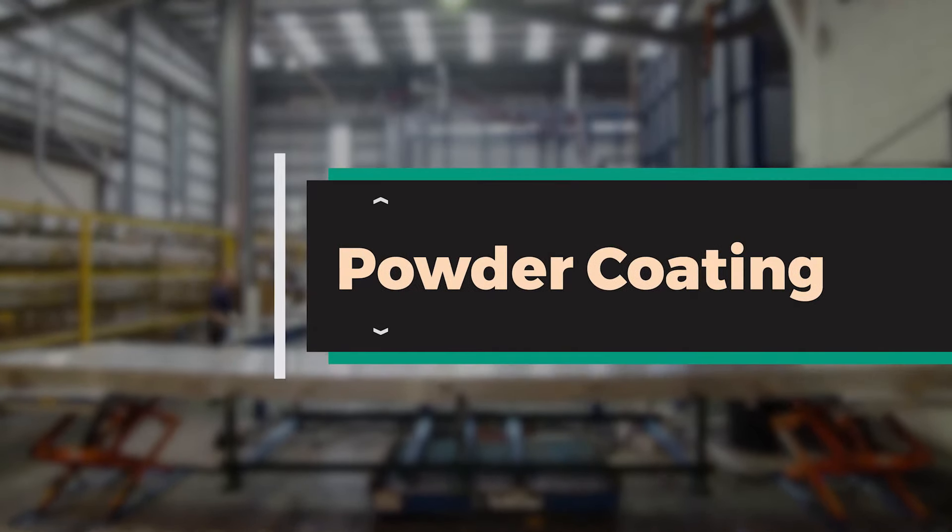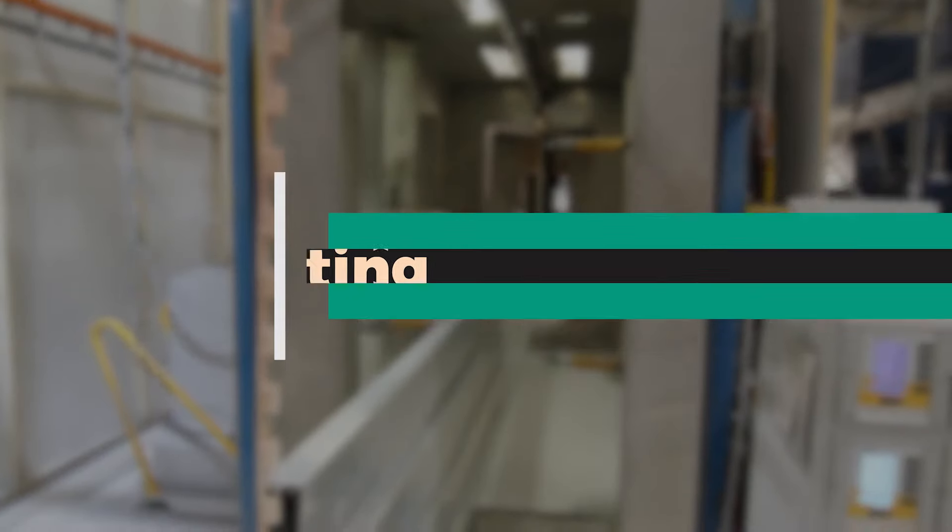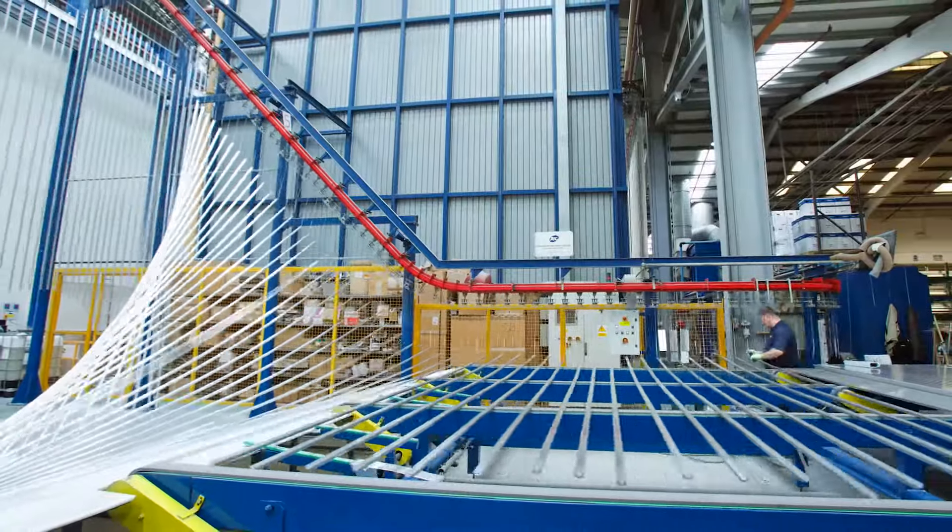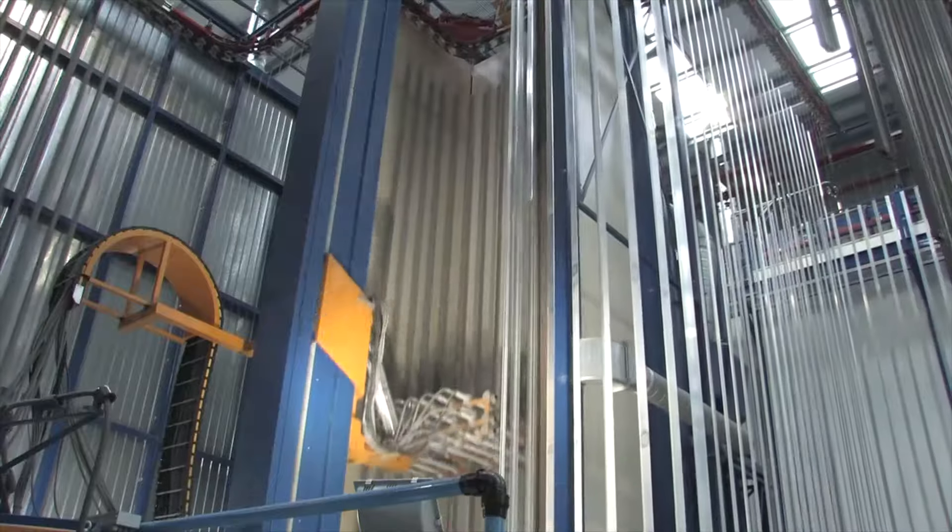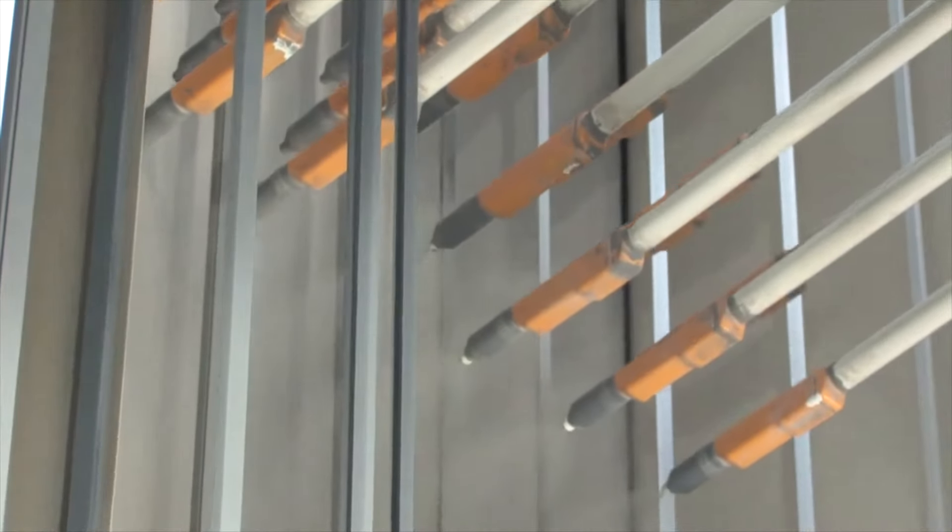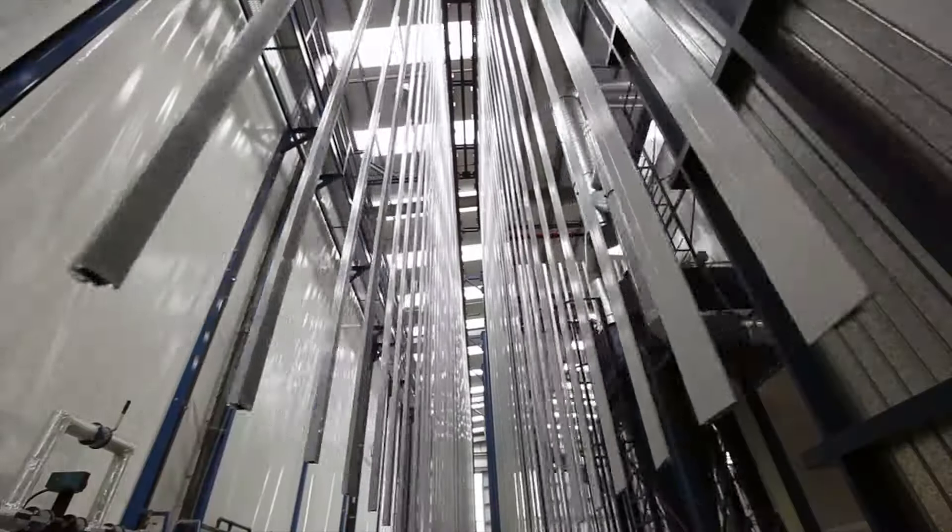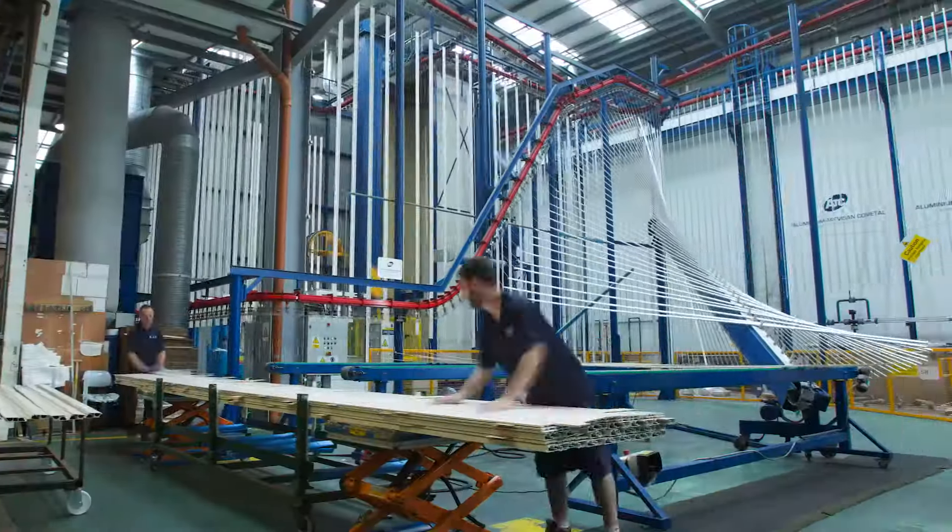AMS's in-house powder coating services are supported by our vertical and horizontal paint lines. Our vertical paint line is particularly efficient, painting over 5000 mil finish aluminium profiles, measuring up to 7.3 metres in each shift.